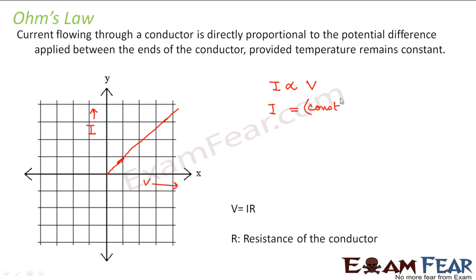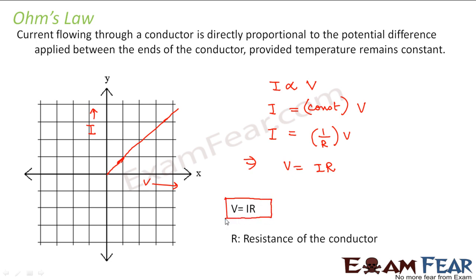So this means if you want to convert this proportionality into an equality, you should bring in a constant. So the current was equal to 1/R into V. From this it was written as V = IR. So V = IR became the mathematical expression of Ohm's law, where R is the resistance of the conductor.